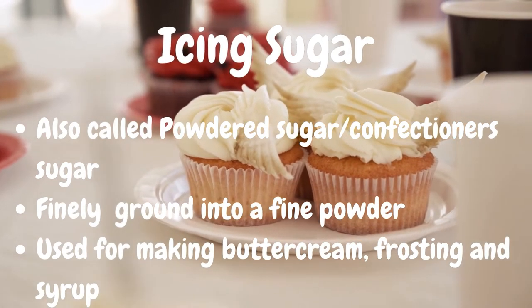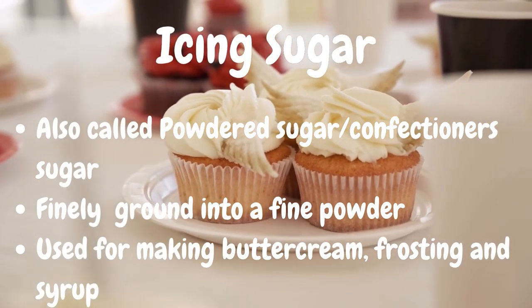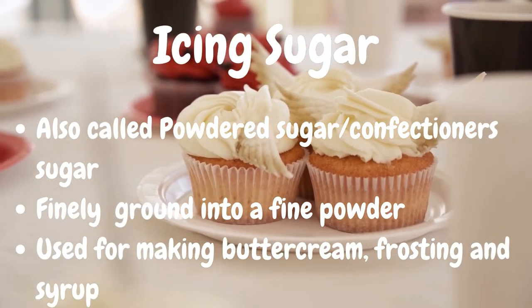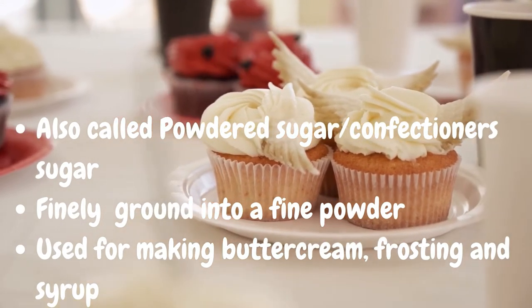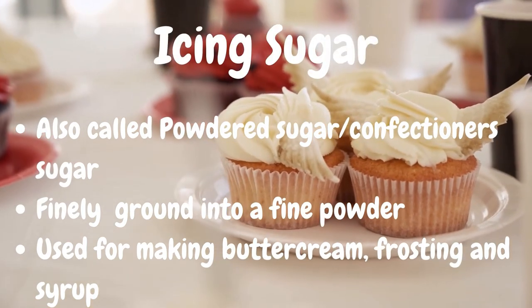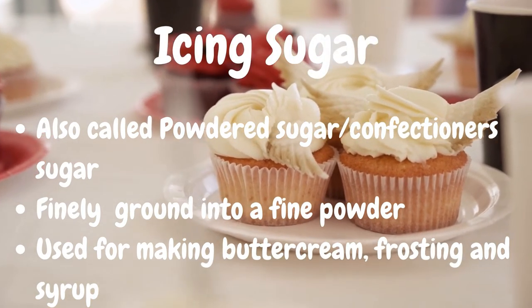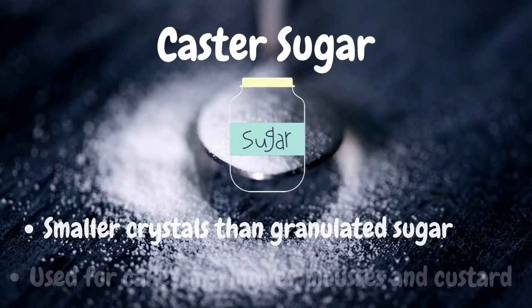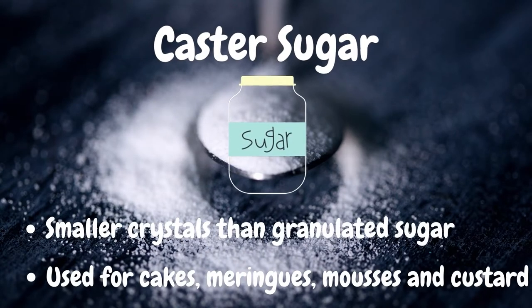Icing sugar is also common. It's also called powdered or confectioner's sugar. It's a fine, powdery sugar used for making buttercream, frostings, and syrups.